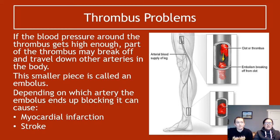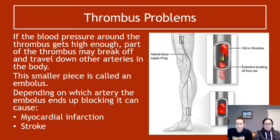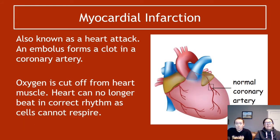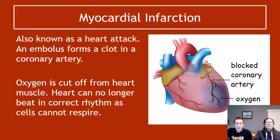Think about this logically: big arteries split and become smaller and smaller until they become capillaries. So if we have a clot in a big artery and a little bit of that clot breaks off, we are going to end up blocking a smaller artery further down the chain. If that smaller artery is in the heart, that's where we get myocardial infarction; if it's in the brain, that's when we get a stroke.